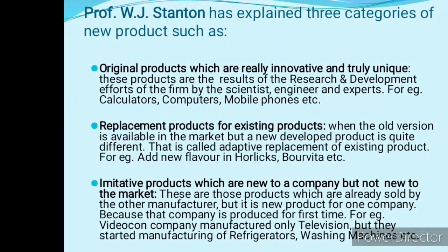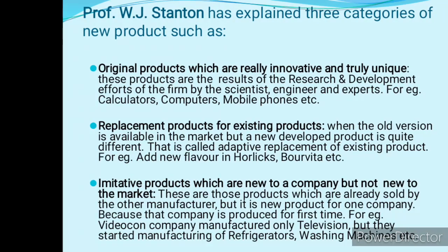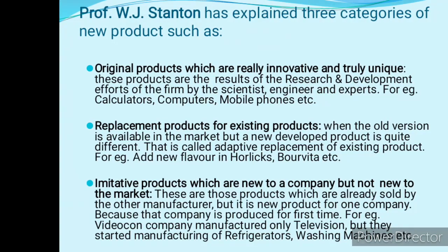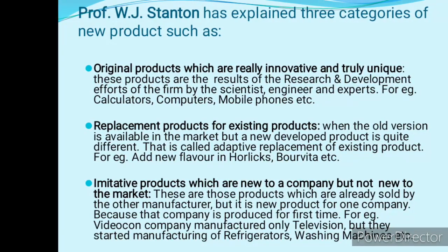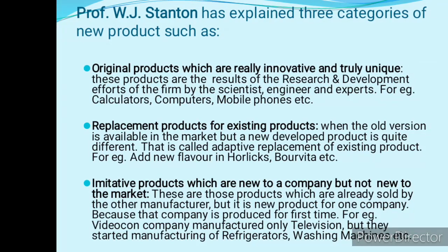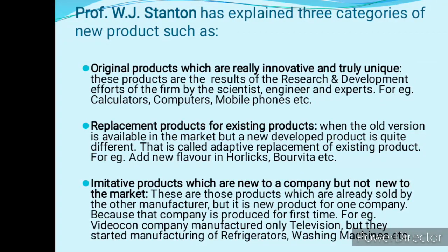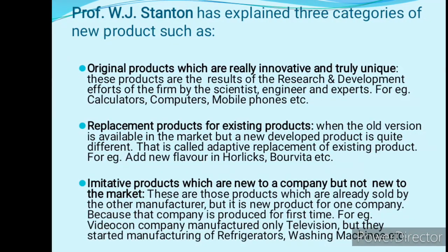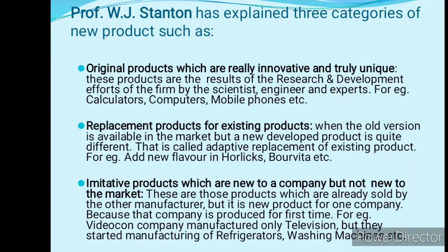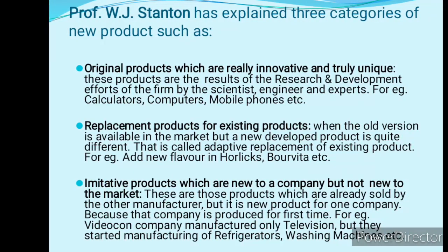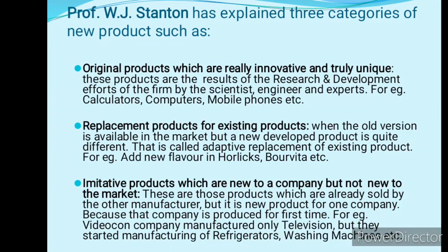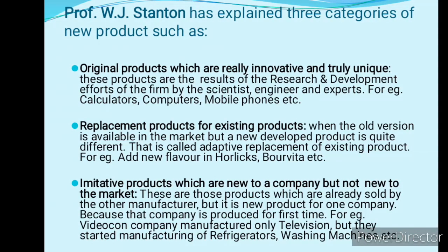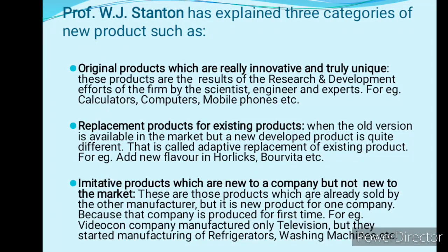Similarly, Professor W.J. Stanton also explained new products in three categories. The first is the original product, which is really innovative and truly unique. These are products that companies introduce after extensive research and development efforts, and no substitute is available for them. For example: calculators, computers, mobile phones, vacuum cleaners, and inverters — these are examples of original products which are really innovative.